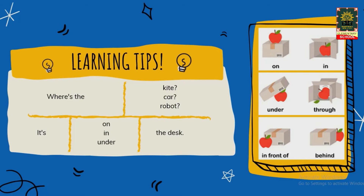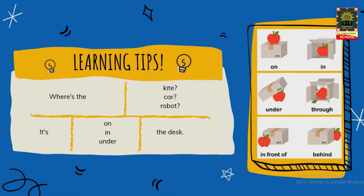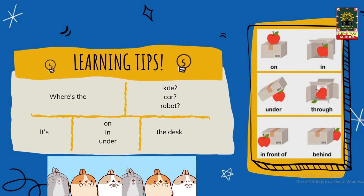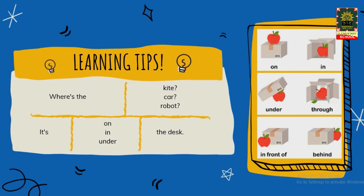Selanjutnya, pada tulisan 'under', ada buah apel di bawah kardus. Artinya, under sama dengan di bawah. Sampai di sini, paham anak-anak? Kalau sudah, kita coba lihat contoh berikutnya.